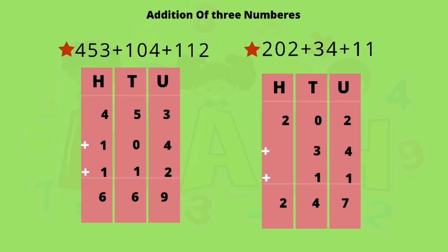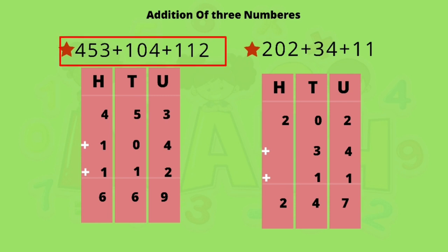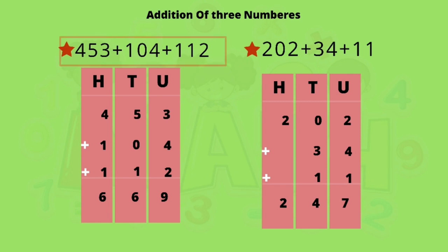Addition of three numbers. Now we are going to study how to add three numbers. First sum: 453 plus 104 plus 112. We will arrange them in vertical order and then solve.